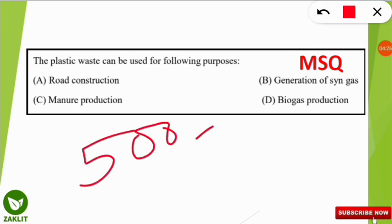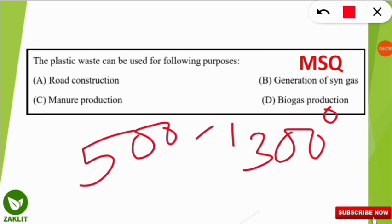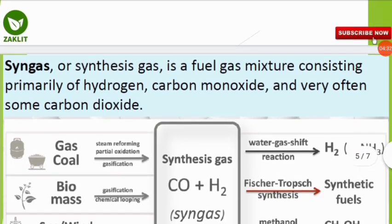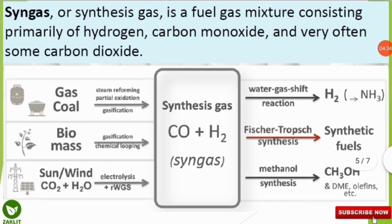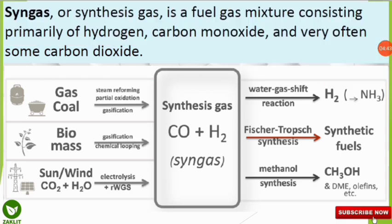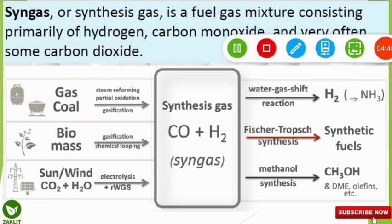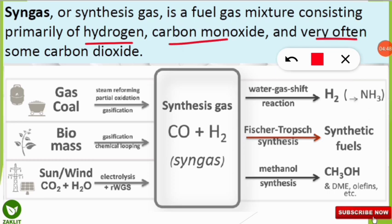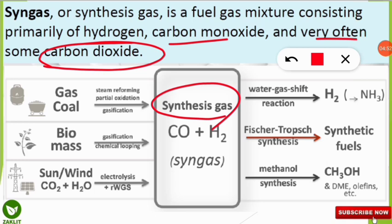Syngas, or synthetic gas, is a mixture primarily of hydrogen gas and carbon monoxide, and very often some carbon dioxide as well. We will now look at how syngas is formed from different processes and what its usages are.